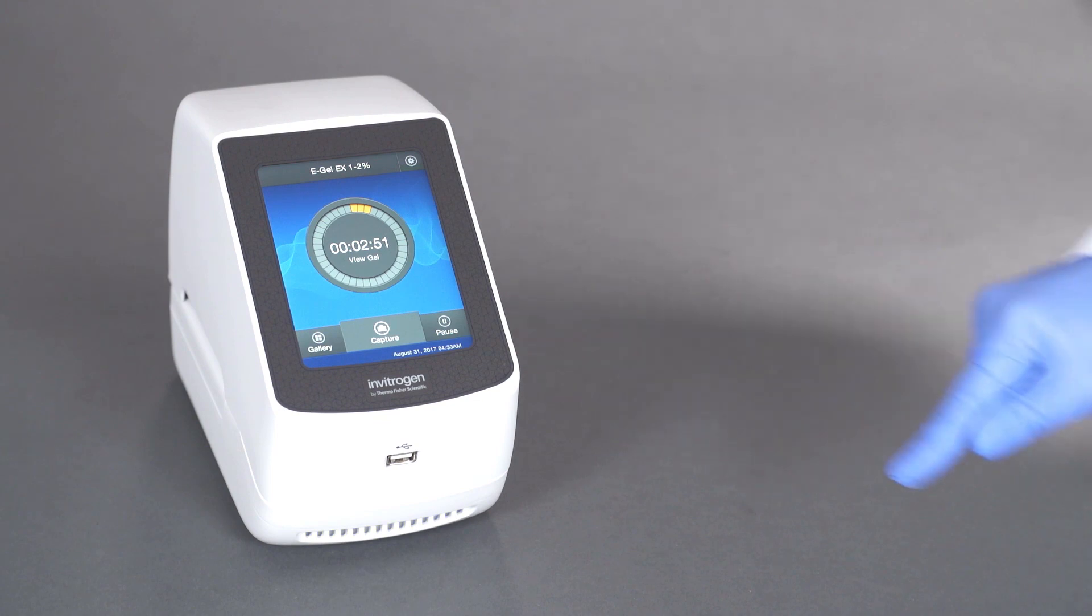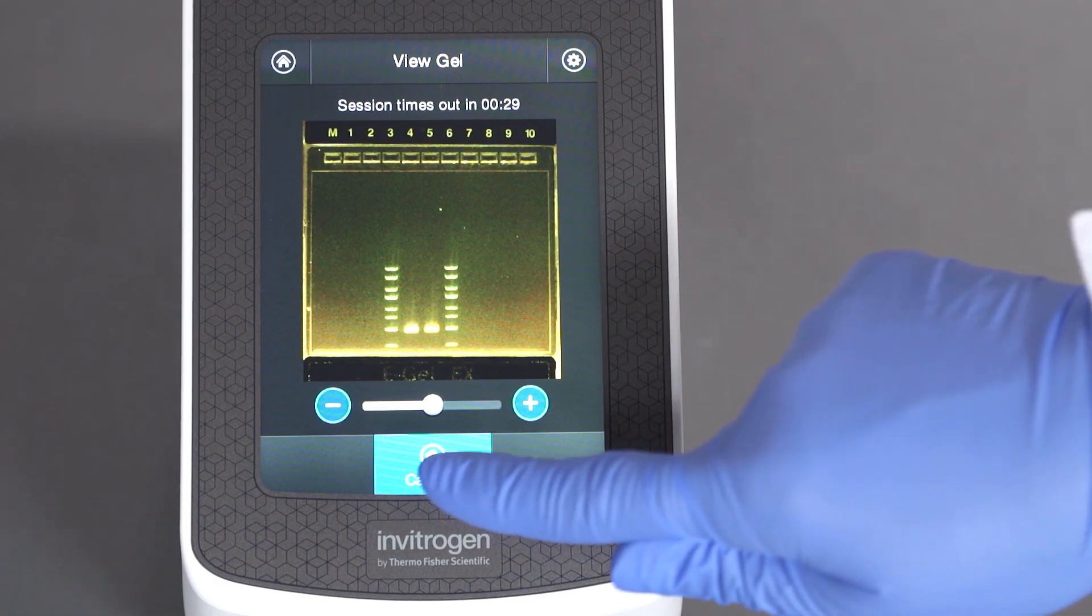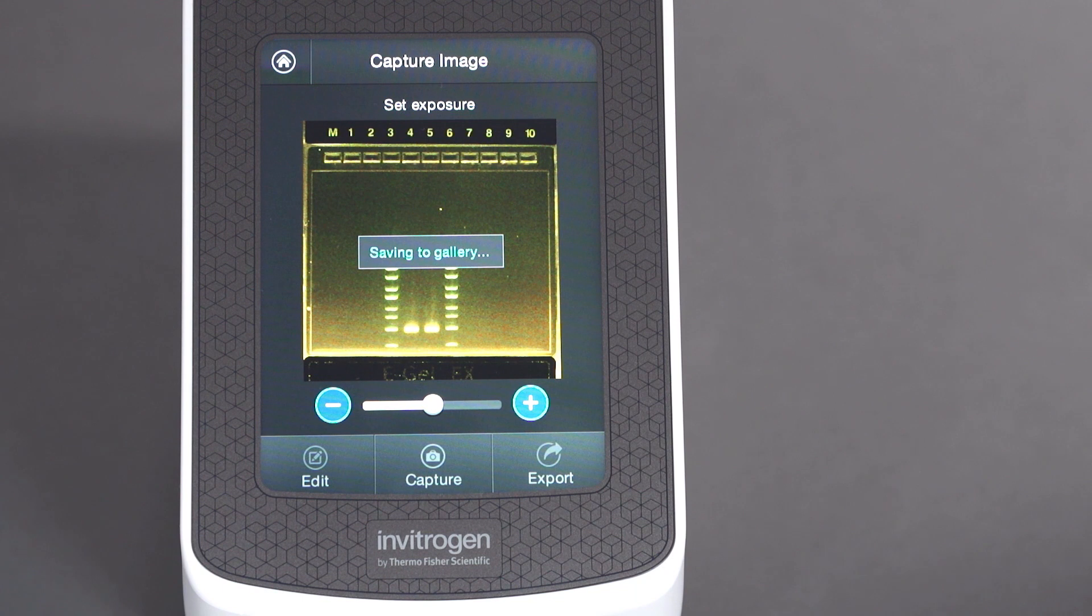To snap a picture at any time during the run, select View Gel from the home screen and then select Capture.